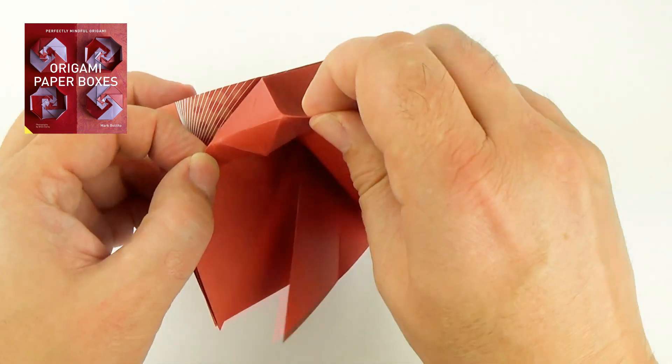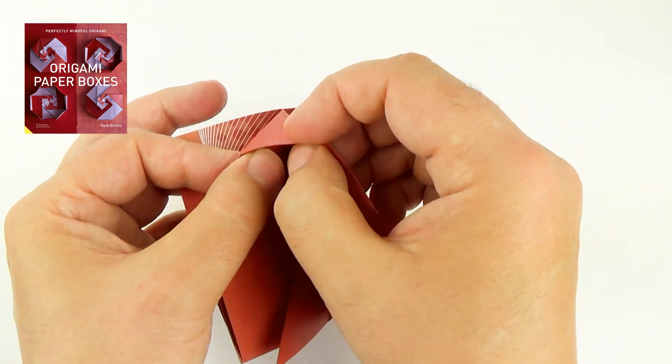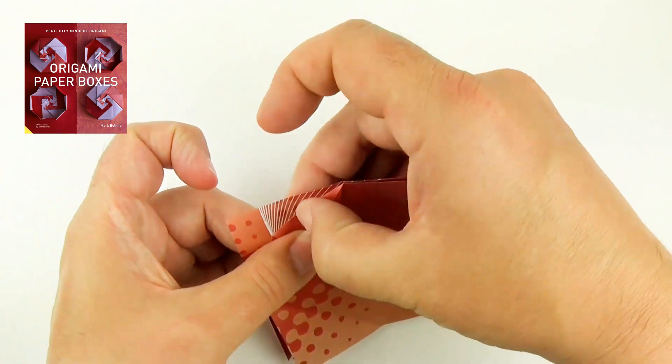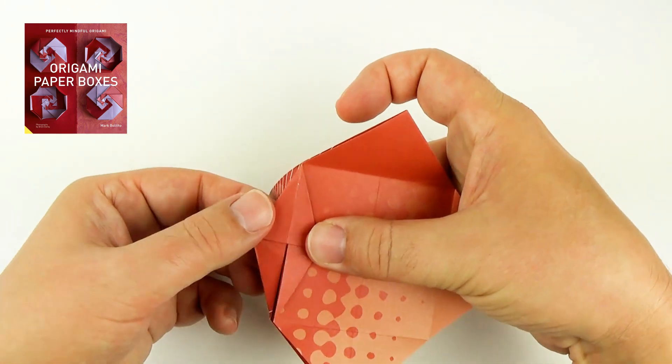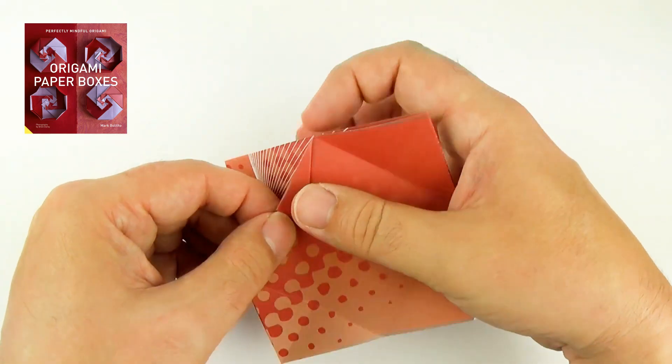And I'm going to pull the points apart and then tuck that corner inside. So I'm turning it inside out. And that makes a shape like a diamond shape. I've got one side behind.